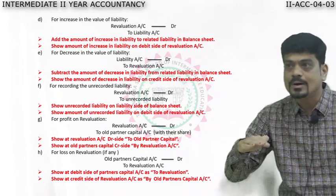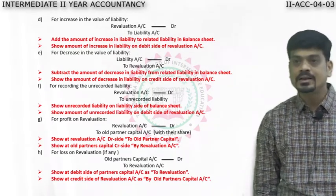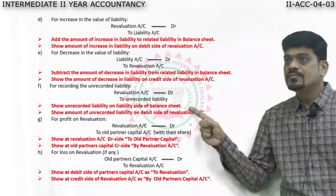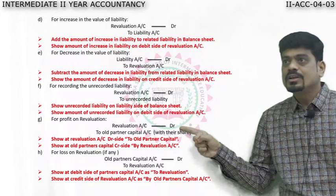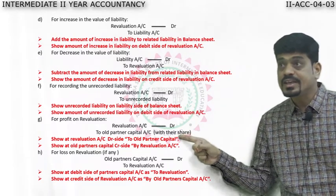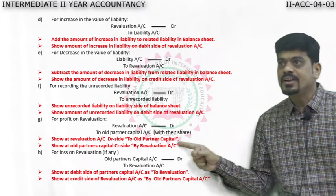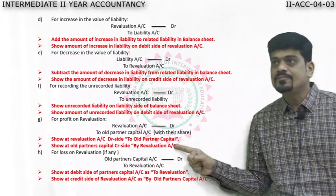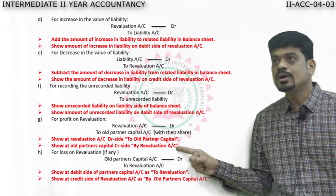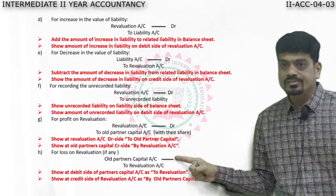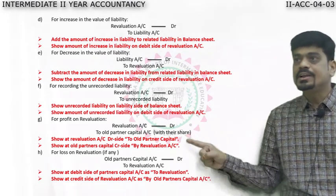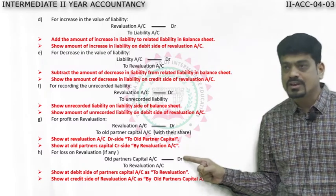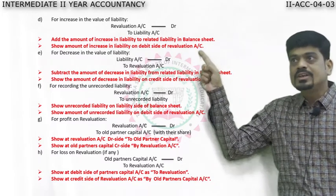The revaluation profit or loss should be distributed among the old partners in the old ratio. When there is profit — Revaluation Account debit to Old Partners' Capital Account (with their respective shares); show on debit side of revaluation and credit side of partners' capital accounts. When there is loss — Old Partners' Capital Account debit to Revaluation Account; the entry is reversed.